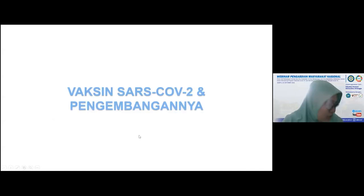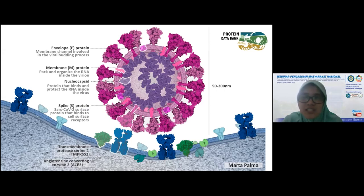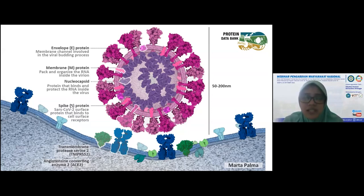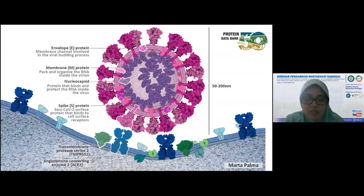Yang kedua adalah vaksin SARS-CoV-2 dan pengembangannya. Ini saya masuk ke apa itu SARS-CoV-2? Apa itu virus COVID? Ini merupakan struktur dari virus SARS-CoV-2. Yang berperan penting dalam penginfeksian ke inang atau ke tubuh manusia adalah protein spike. Protein spike ini terdiri dari dua yaitu spike 1 dan spike 2. Di tubuh manusia, si spike ini akan berikatan dengan reseptor yaitu angiotensin converting enzyme 2 atau ACE2.